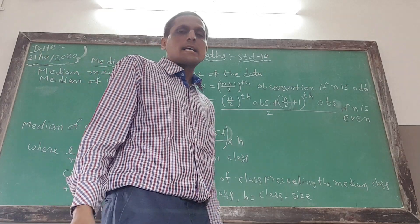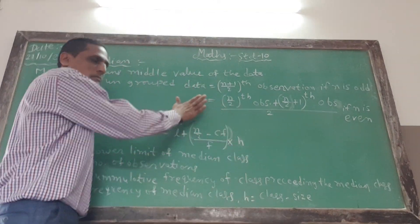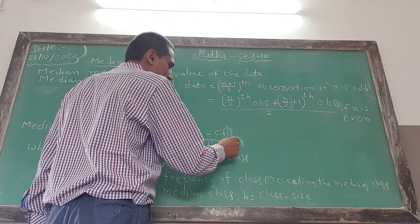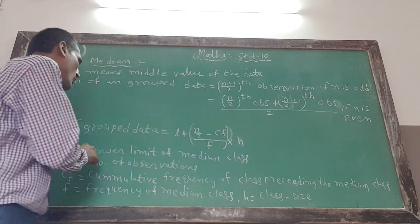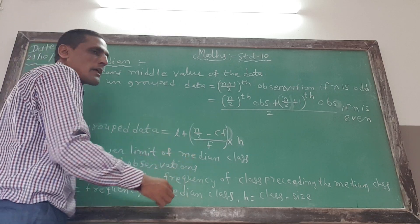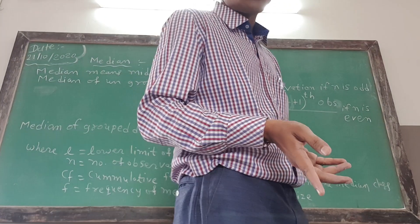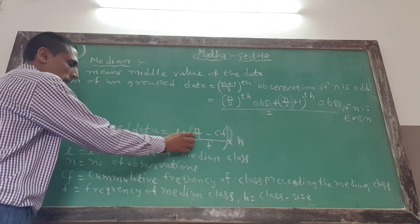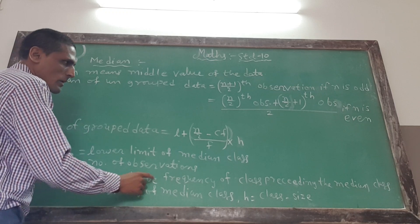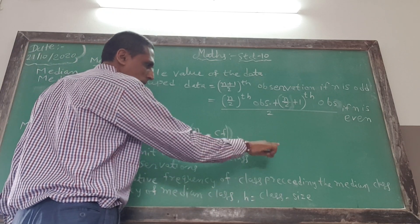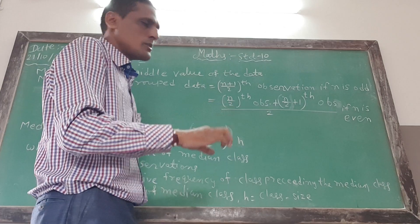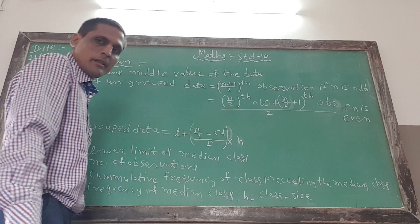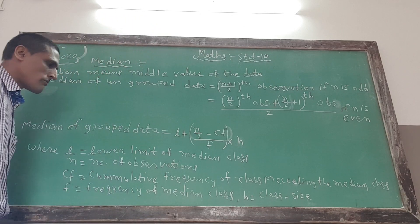Look at all the classes. This is CF and others. These are classes. N plus N by 2 minus CF divided by F into C. So where it can go to the median class, we will not be able to get to the observation directly.